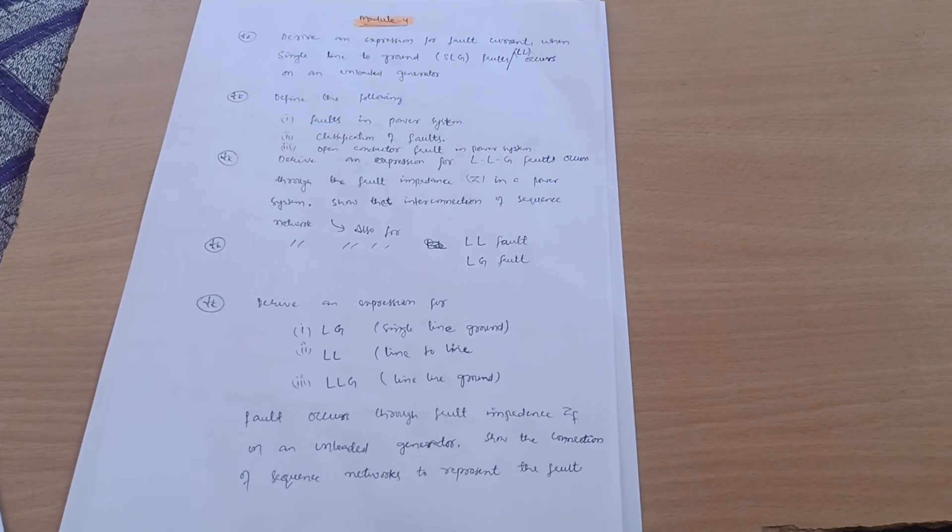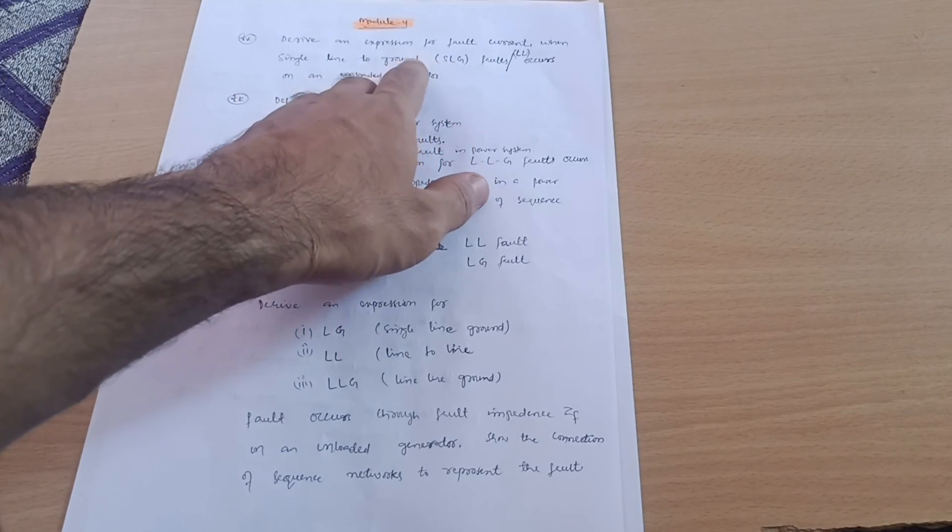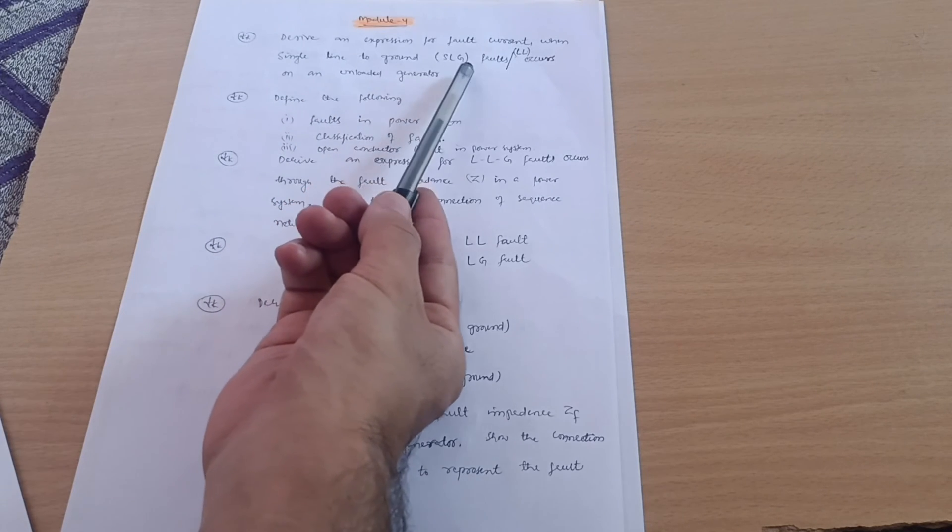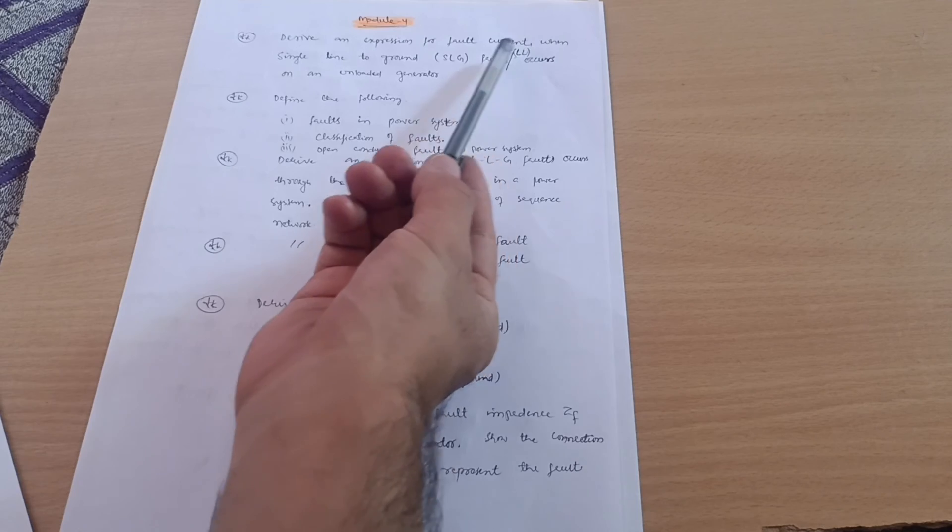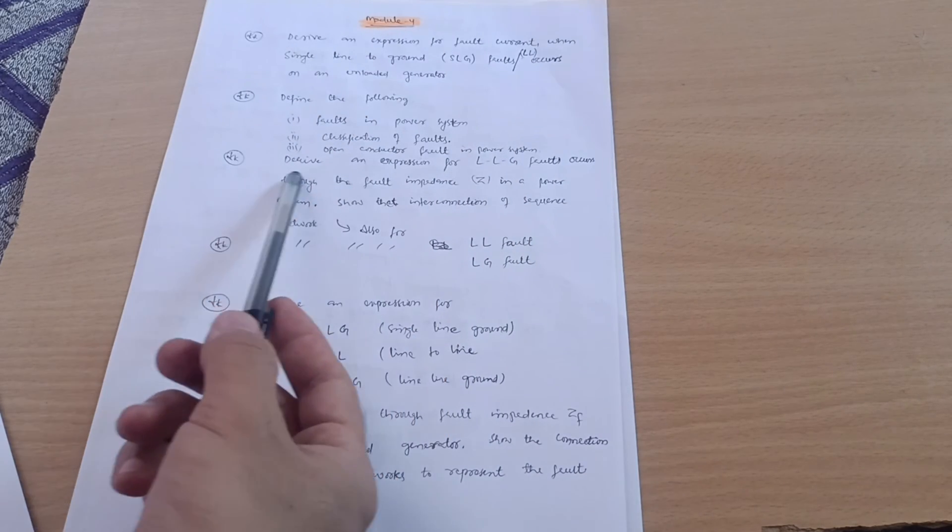Next is Module 4. You can take this screenshot. Wherever I have written these slashes, they may ask you to derive an expression for fault current when single line to ground SLG faults occur, or line to line faults occur on an unloaded generator.